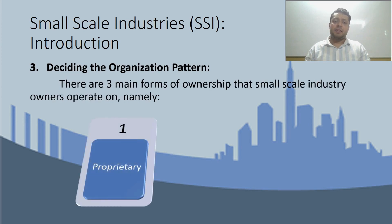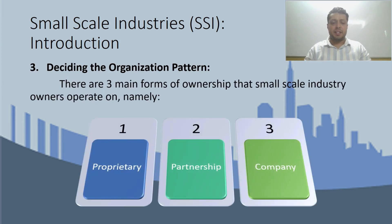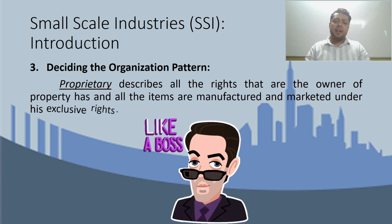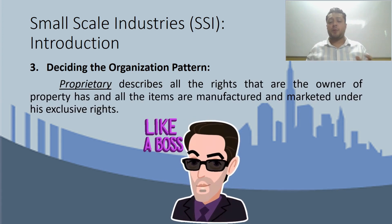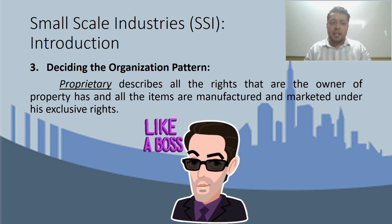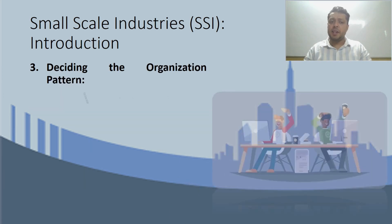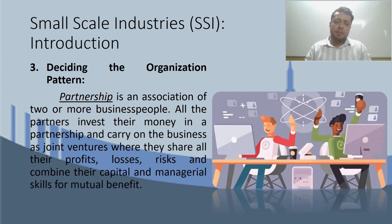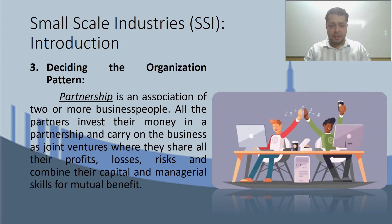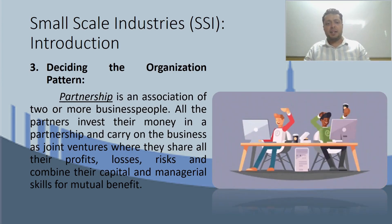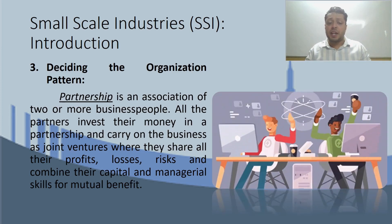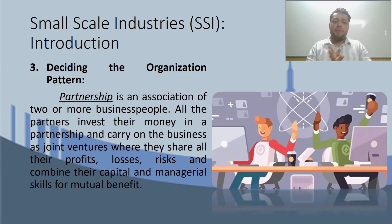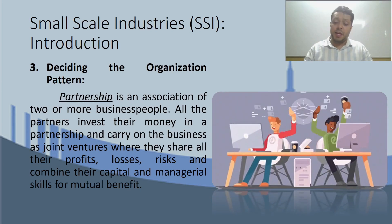Point number three: deciding the organization pattern. There are three types of ownership under which small-scale industries can operate. First is proprietary, which describes all the rights of a property owner — whether regarding manufacturing or marketing of a product — all exclusive rights belong to the property owner. Second is partnership, which is an association of two or more people; all partners invest money in the partnership and run the business like a joint venture, sharing all profits, losses, and risks.